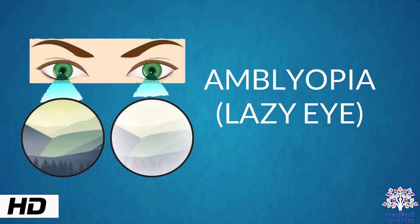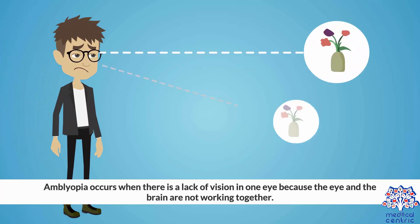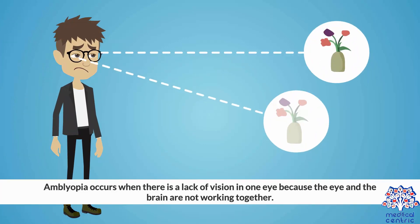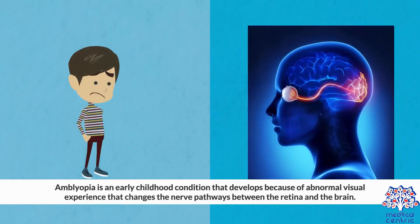Today's topic is amblyopia, or lazy eye. Amblyopia occurs when there is a lack of vision in one eye because the eye and the brain are not working together. Amblyopia is an early childhood condition that develops because of abnormal visual experience that changes the nerve pathways between the retina and the brain.